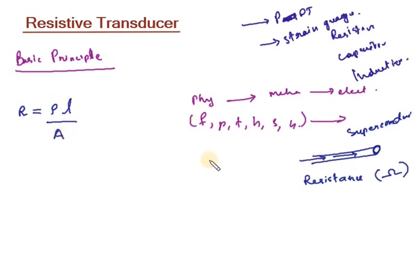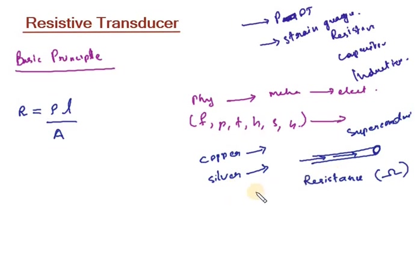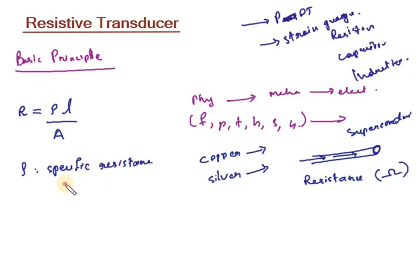What is ρ (rho)? If we use copper or any other material, that material has a specific resistance. That is the specific resistance of that material. If we use silver, we use the resistance of silver. But we normally use copper conducting wires because silver is highly expensive. So ρ is the specific resistance of the material of the wire.